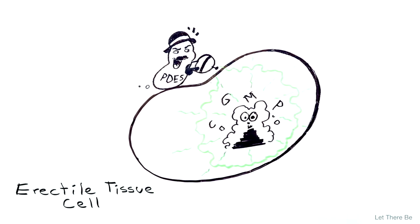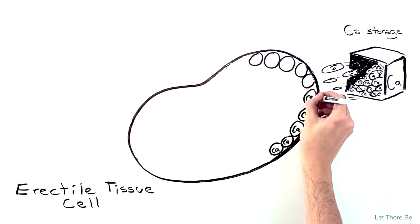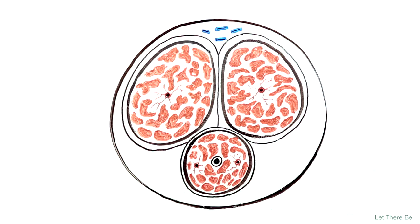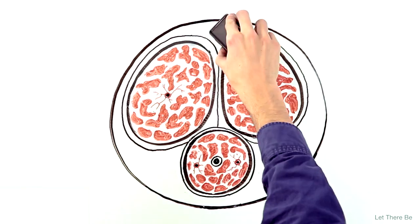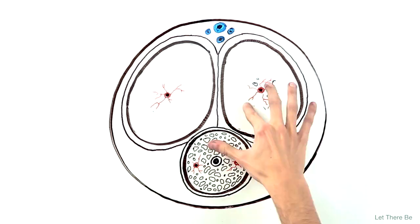As cyclic GMP decreases, calcium leaves its storage areas causing smooth muscle contraction. As erectile tissue contracts, blood drains more easily from the penis, leaving it in a flaccid state.